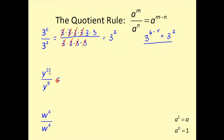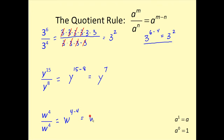As the exponents get larger, it gets more tedious to write out fifteen factors of y and eight factors of y. So we apply the quotient rule by taking the exponent in the numerator and subtracting the exponent from the denominator to obtain y to the seventh. For the last quotient example, anything over itself equals one. Applying the quotient rule gives us w to the four minus four power, or w to the zero power, which equals one. Anything raised to the zero power is equal to one.